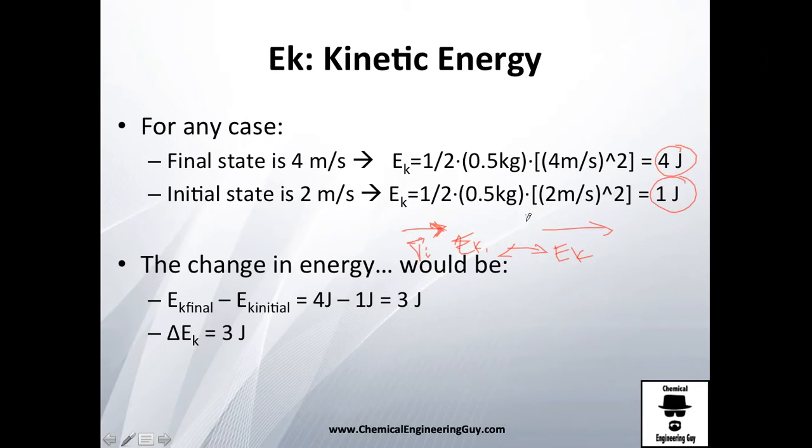And the second energy will be a little bit higher, so you can relate right now that you will need to get more energy inside that system. So how do you do that? You just calculate the difference, and I will give you three joules. What is this three joules about? It's the amount of energy you need to add to the system in order to get to that velocity.